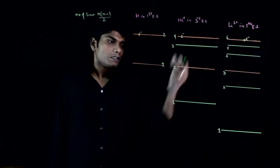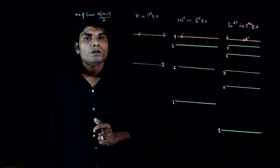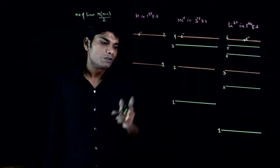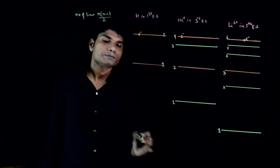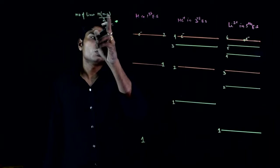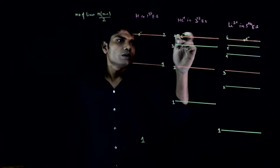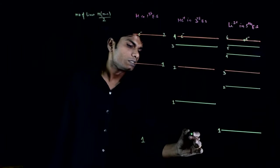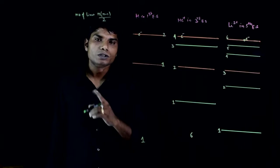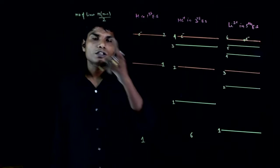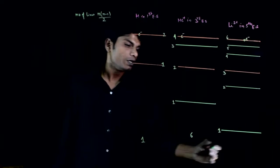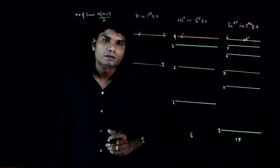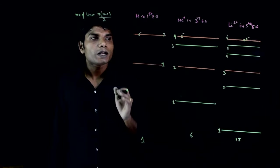Now let's calculate the number of lines for each species. For hydrogen: n(n−1)/2 = 2×1/2 = 1 line. For helium plus: n=4, so 4×3/2 = 6 lines. For lithium 2 plus: n=6, so 6×5/2 = 15 lines. So it seems like the total number of lines will be 1 + 6 + 15 = 22.